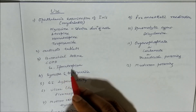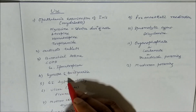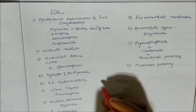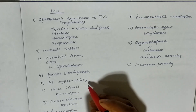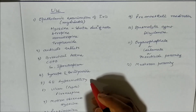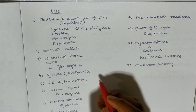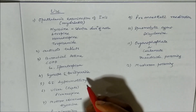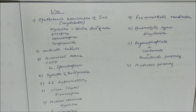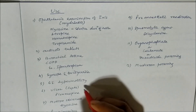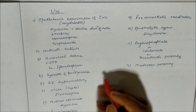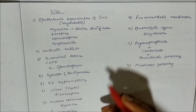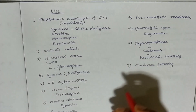We can also use them in syncope and bradycardia. In case of GI hypermotility also, we can use them to decrease the motility. In peptic ulcer, we can use them to reduce the acid secretion — again as second-line drugs, because the drugs of choice are H2 receptor antagonists and proton pump inhibitors.